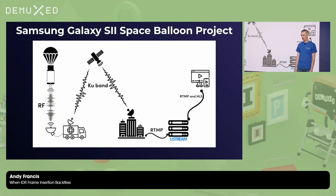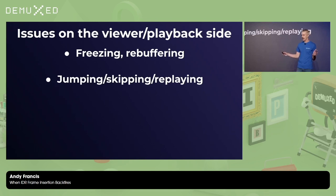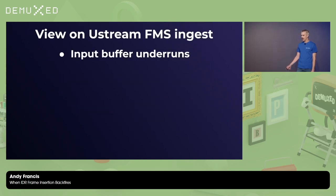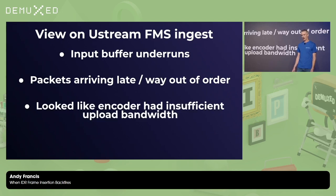This mostly worked pretty well, but there were some issues. On the player side, we were seeing some freezing and rebuffering. Sometimes the content was jumping ahead; sometimes there were segments being replayed. This wasn't happening all the time — it was coming and going with no real obvious pattern, at least at first. On the ingest side, we were seeing input buffer under-runs on the Flash Media Server, packets arriving way late and way out of order — basically looking like any time a Ustream user tried to stream at a bit rate too high for their upload bandwidth.